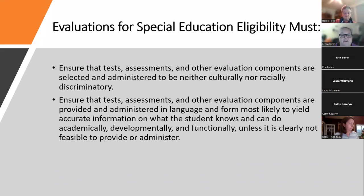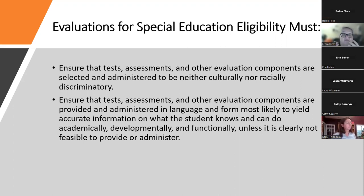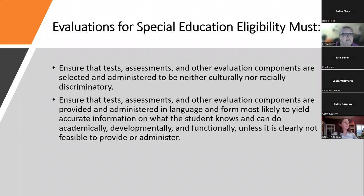When evaluating for special education eligibility, it's very important to ensure that tests, assessments, and other evaluation components are selected and administered to be neither culturally nor racially discriminatory. Tests and evaluation components must be provided and administered in a language and form most likely to yield accurate information on what the student knows and can do academically, developmentally, and functionally — unless it is not feasible to do so, which can be very challenging, especially in the more rural parts of Maine.